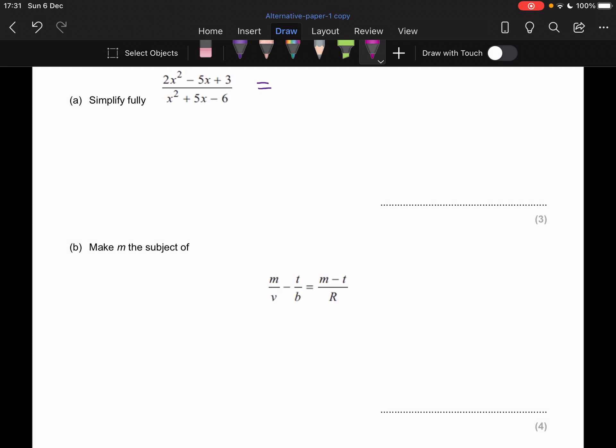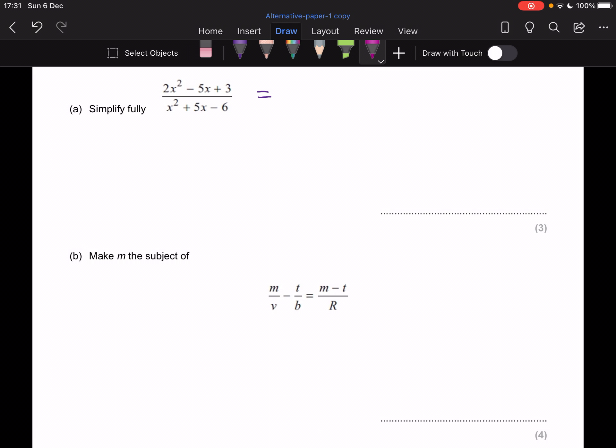Hi kids, let's have a look at question number 18. Part A is asking us to simplify fully. It's a fraction that's got two quadratics, one on numerator, one on denominator. So what we have to do is factorise them, we put them in brackets, and then we simplify the brackets that appear on numerator and denominator and are identical.